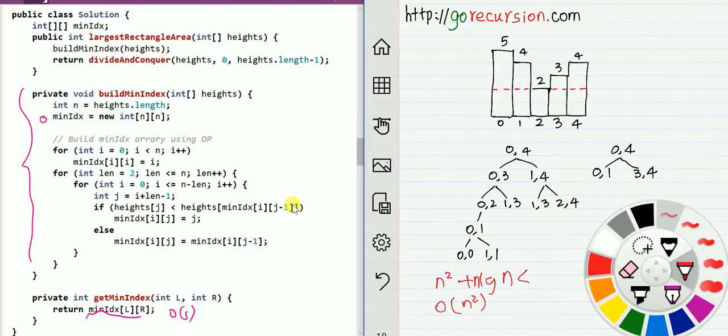The total time complexity would be O(n²) plus O(n log n), which is order O(n²), because O(n log n) is less than O(n²). Now can we do better? Yes, we can.